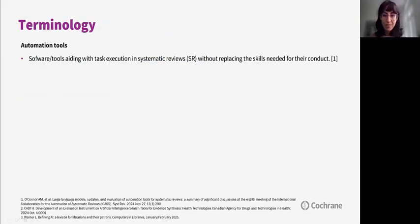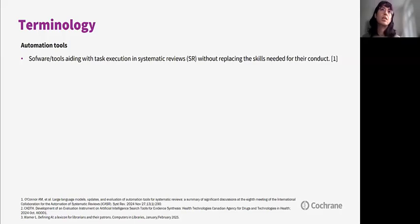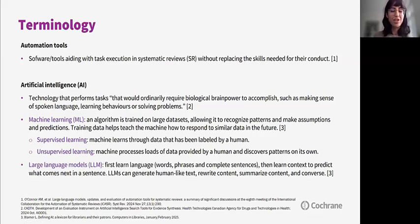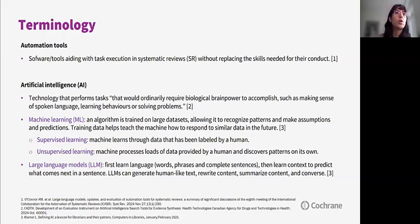Beginning with the terminology, we would like to start by speaking about automation tools. Automation tools are generally understood as software or tools that aid with the execution of systematic review tasks without replacing the skills needed for their conduct. AI, on the other hand, is a technology that performs tasks that would ordinarily require biological brain power, such as making sense of spoken language, learning behaviors, or solving problems. One type is machine learning, where an algorithm is trained on large datasets, allowing it to recognize patterns and make predictions.